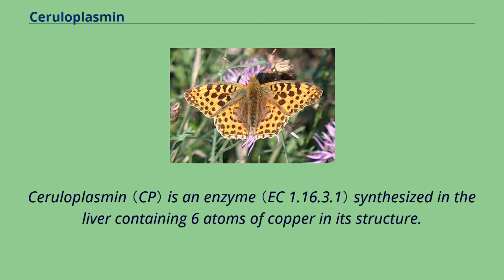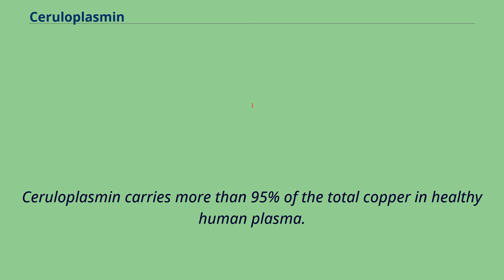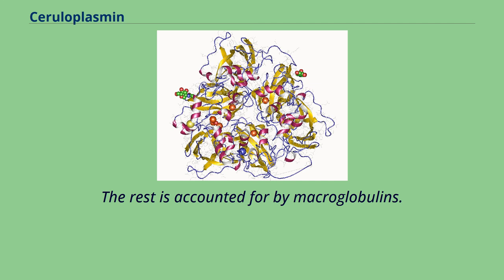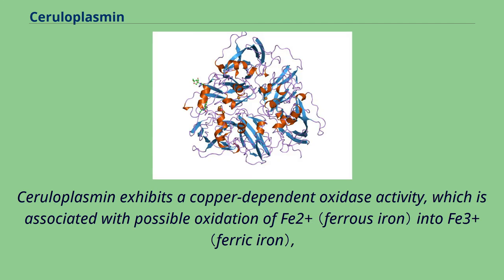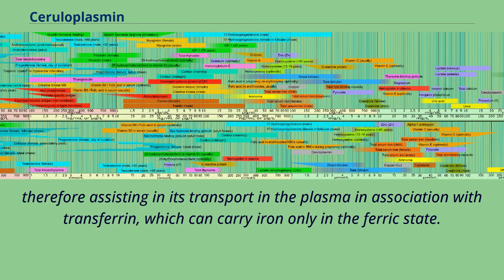Ceruloplasmin is an enzyme synthesized in the liver containing six atoms of copper in its structure. It carries more than 95% of the total copper in healthy human plasma, with the rest accounted for by macroglobulins. Ceruloplasmin exhibits a copper-dependent oxidase activity, associated with the oxidation of Fe2+ into Fe3+, thereby assisting in its transport in the plasma in association with transferrin, which can carry iron only in the ferric state.